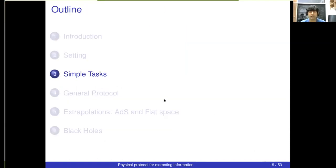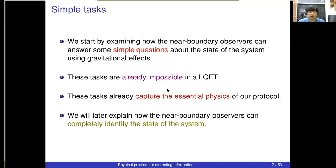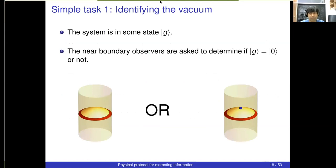The summary so far is that the observers can act with simple unitaries and make simple projective measurements — nothing unusual is happening; this is the textbook framework for quantum information. Now we'll start asking the observers some simple questions and see how they can use gravitational effects to answer questions about AdS. These questions will be yes-or-no questions about the state in global AdS, but I want to emphasize that even these simple tasks are already impossible in local quantum field theory — and they already capture the essential physics of the more general protocol.